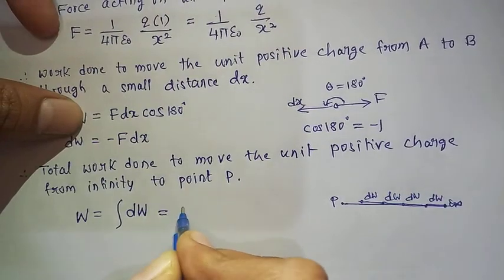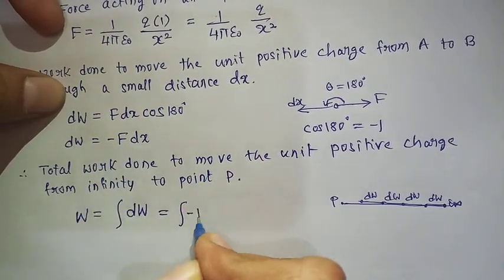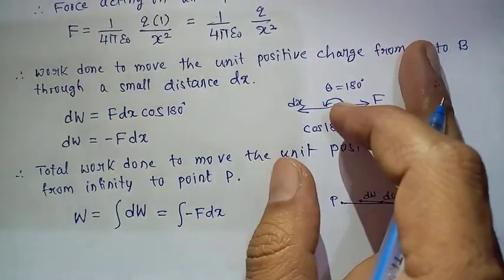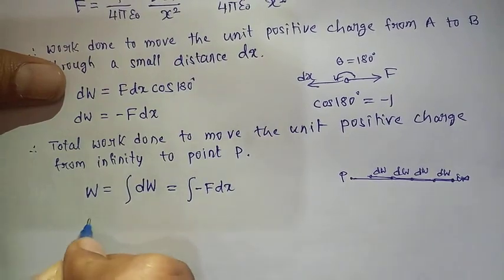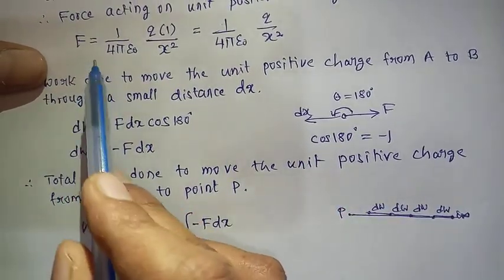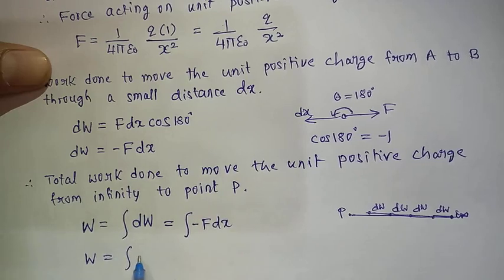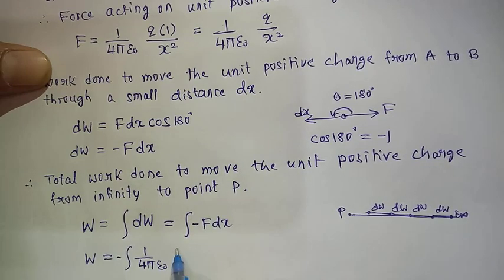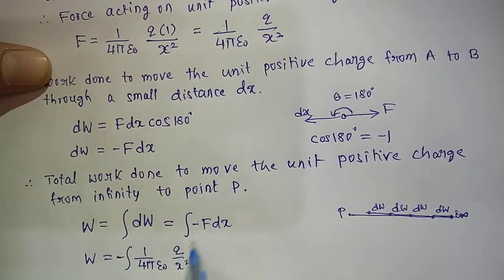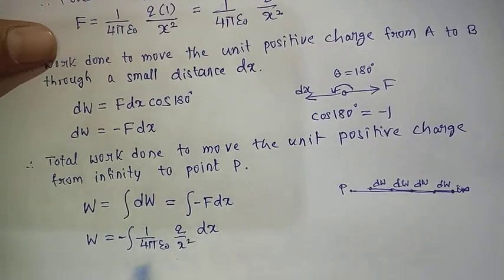The expression for dW is −F·dx. Substituting the value of F: dW = −(1/4πε₀)·(Q/x²)·dx. Taking the constant outside the integral, the total work done W = −(1/4πε₀)·Q · ∫(1/x²)dx, with limits from infinity to r.